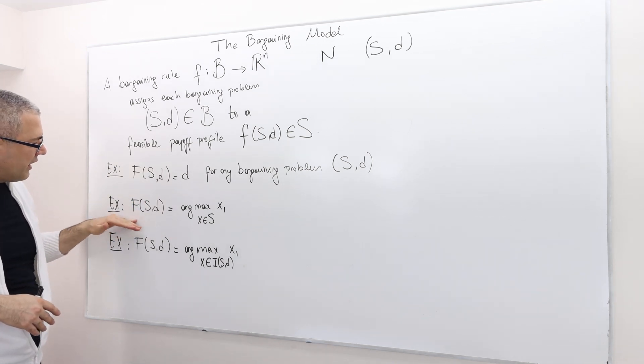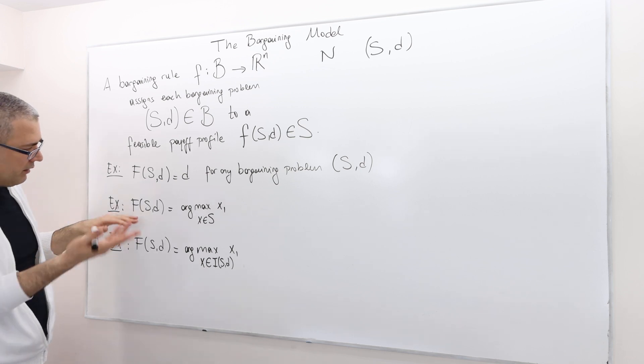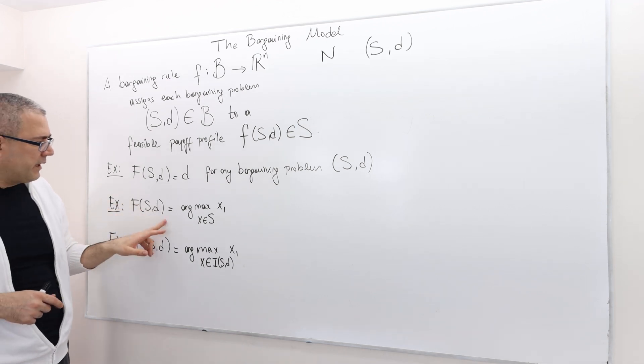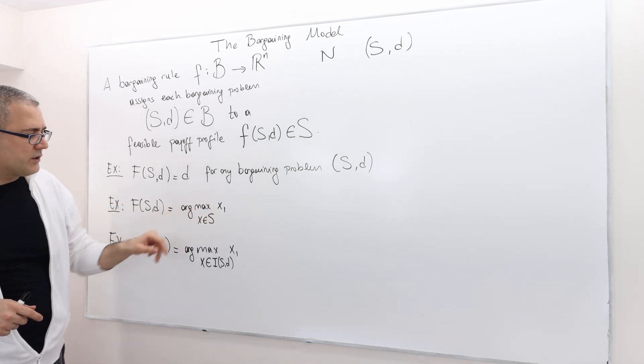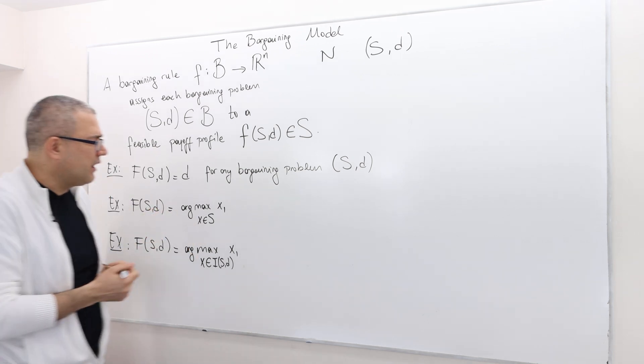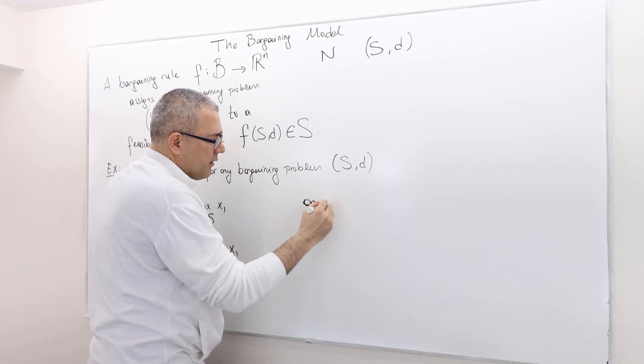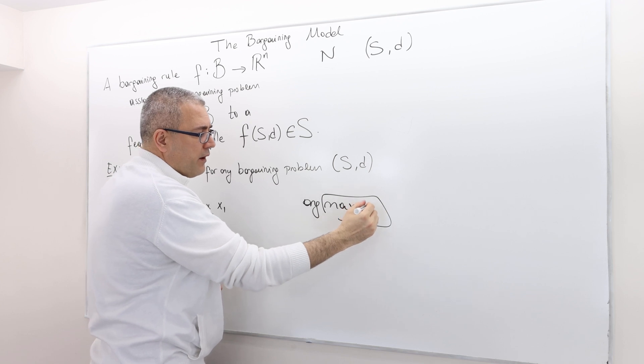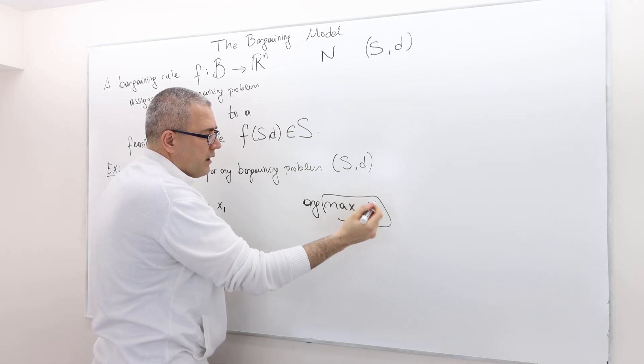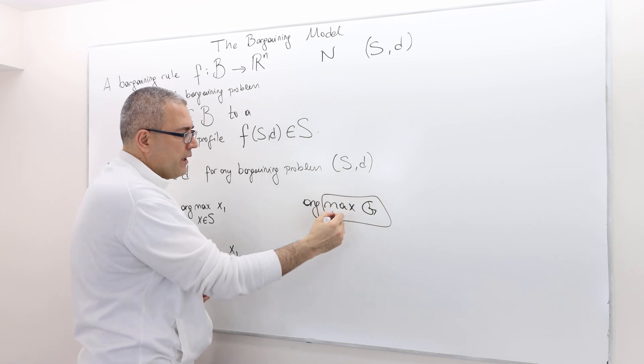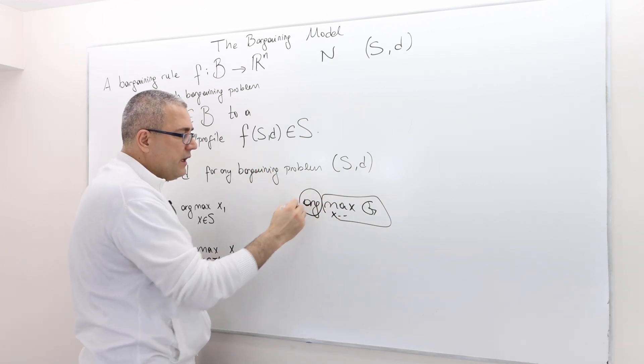Let's look at the second rule. The second rule, a bit more complex than the other one. The rule basically suggests, for any bargaining problem S,d, argmax x1, where x is in S. So what does that mean? First of all, what is argmax?